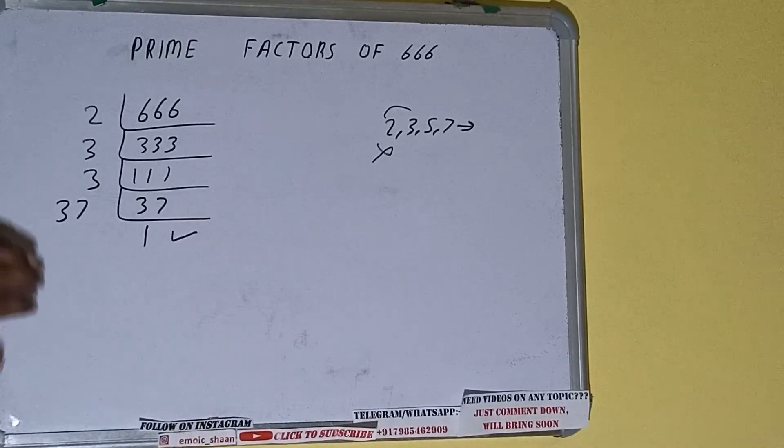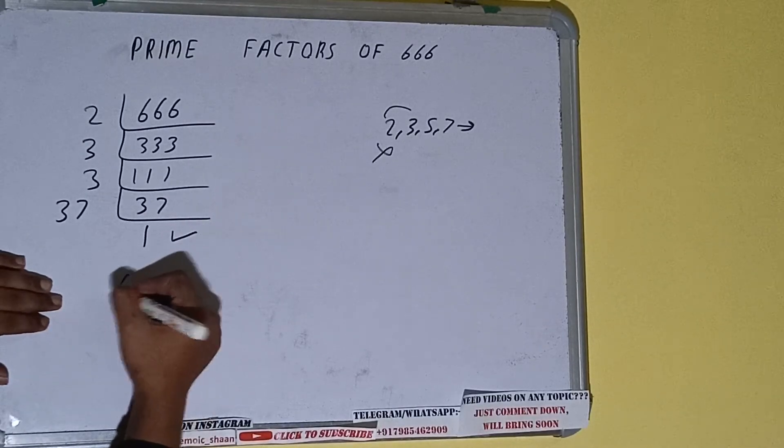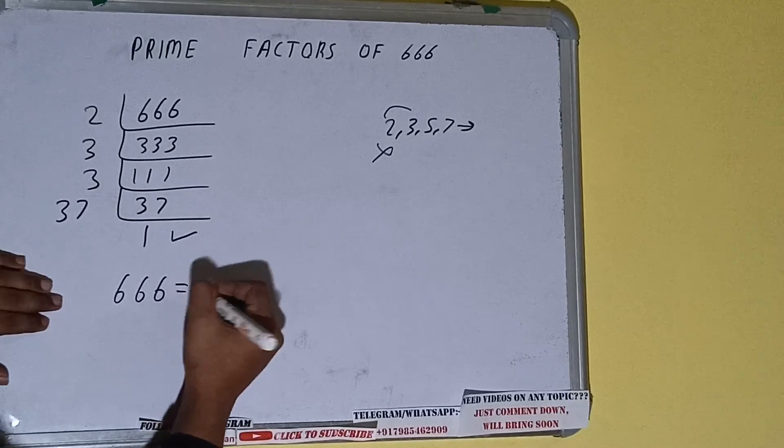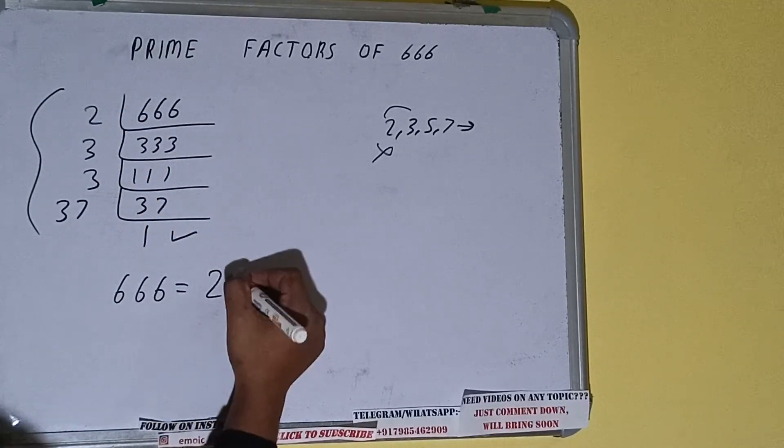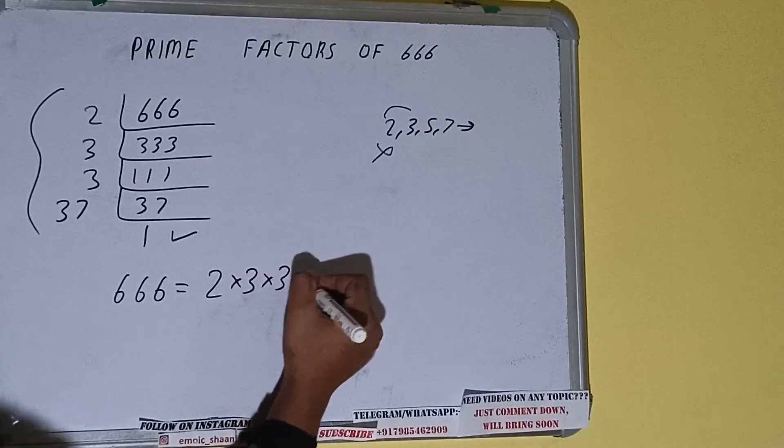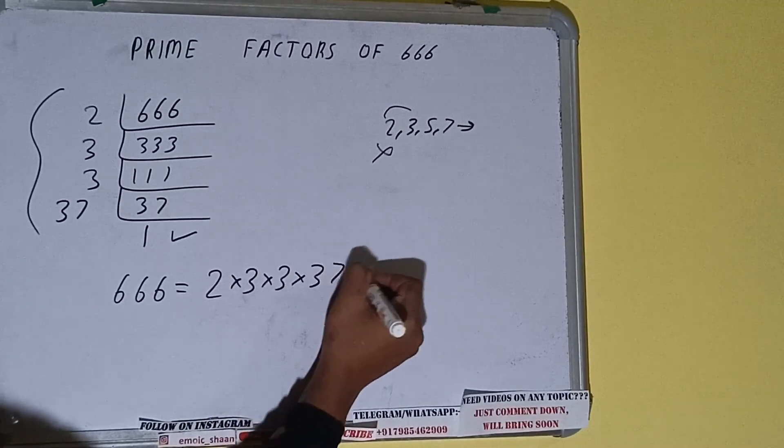Once we get 1 we need to stop and do one last thing that is prime factor of 666 is equal to whatever we have on the left hand side that is 2×3×3×37 that will be the answer.